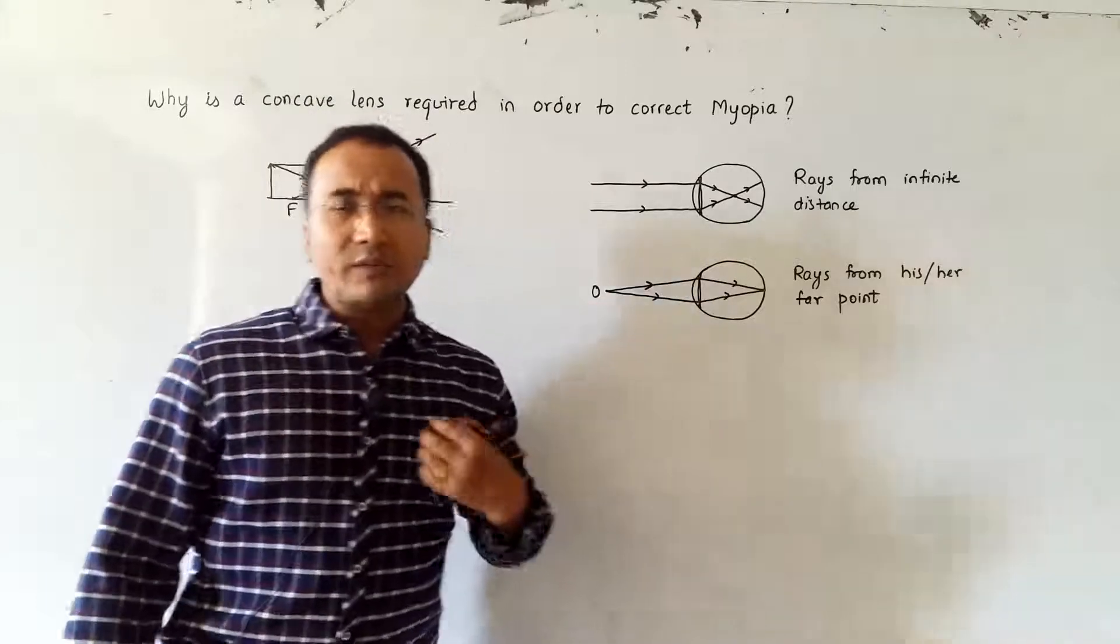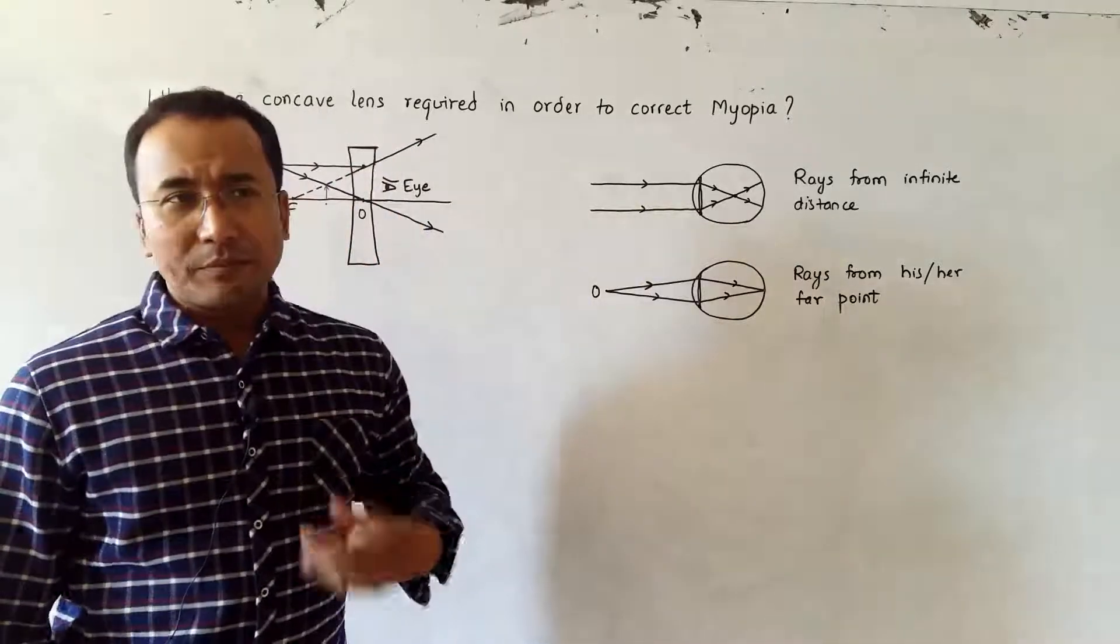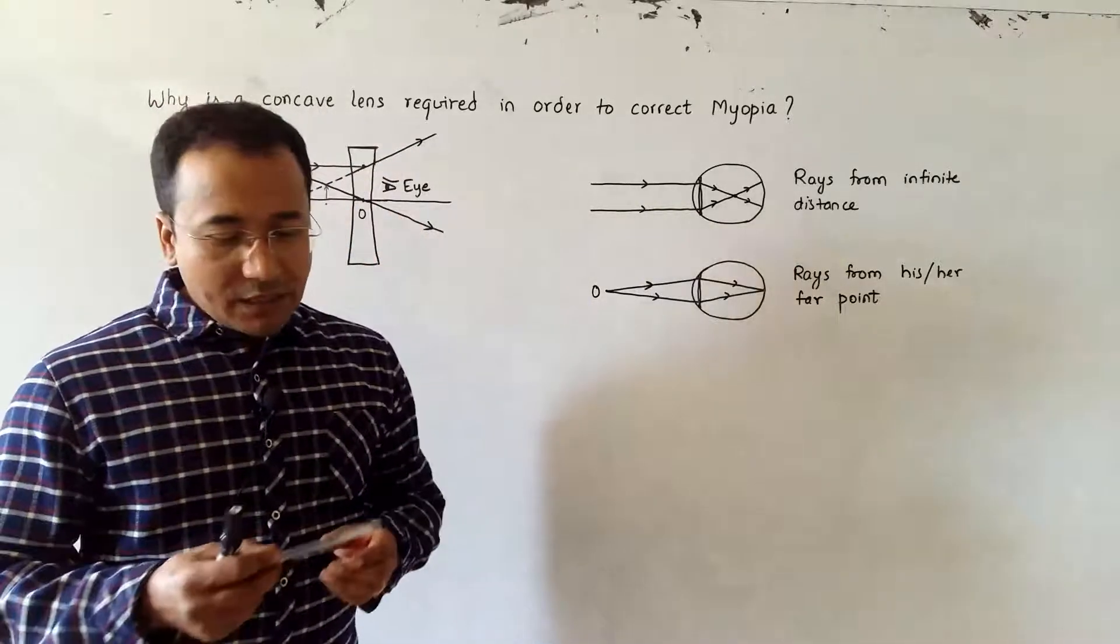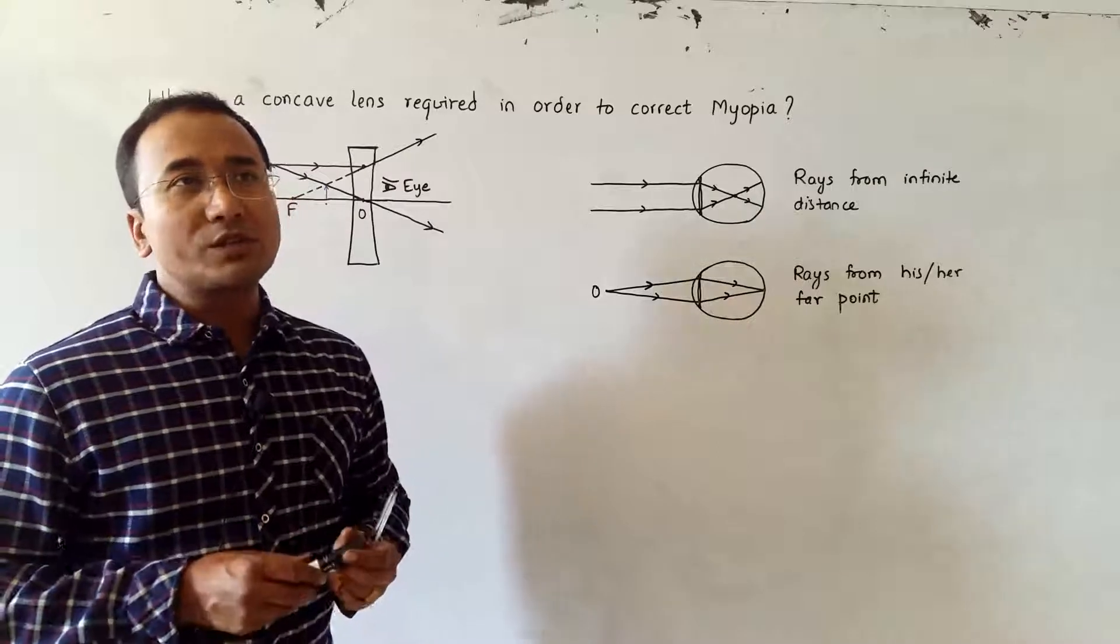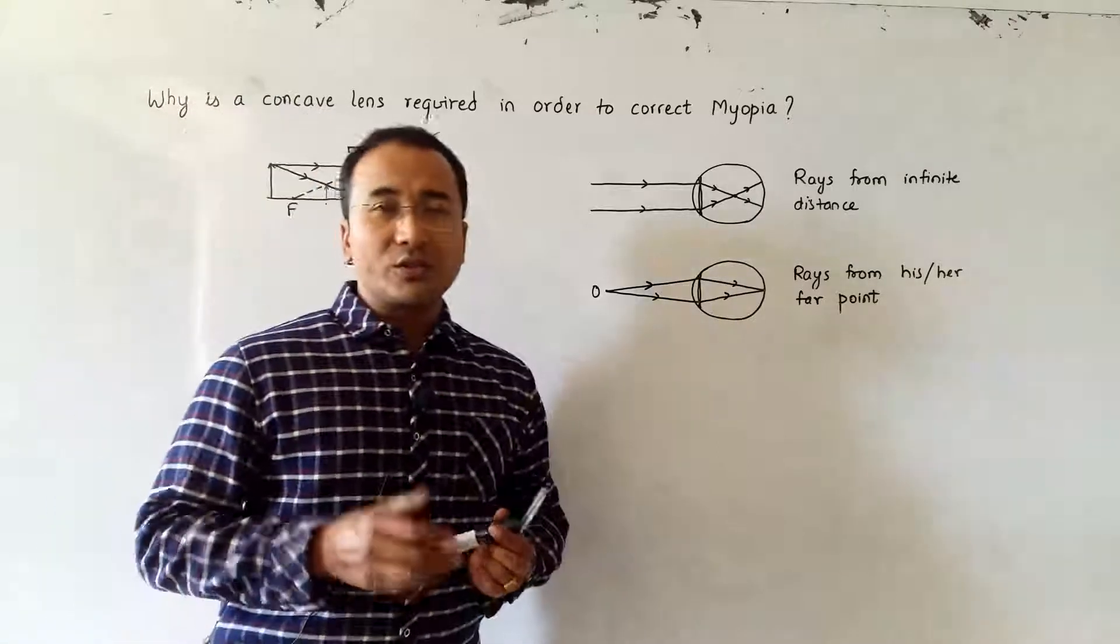So we have to have a mechanism of bringing that far object nearer by some means. This can be done in two ways: one is to use a binocular or telescope, or the other is to use a concave lens.